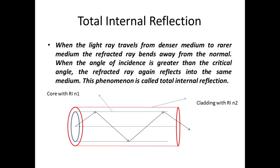We already know that when light travels from a denser medium to a rarer medium, the refracted ray bends away from the normal. And when the angle of incidence of that light — traveling from the denser medium to the rarer medium — is greater than the critical angle, the refracted ray reflects back into the same medium. This phenomenon of the ray reflecting back into the same medium is called total internal reflection.